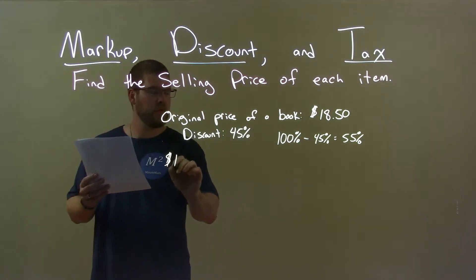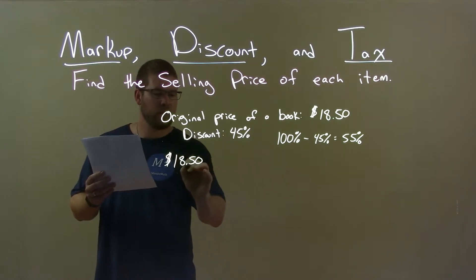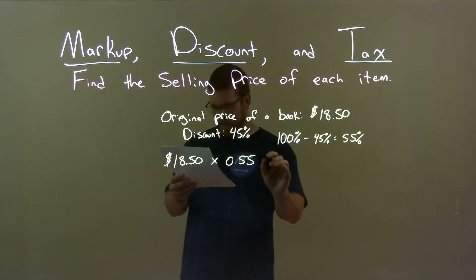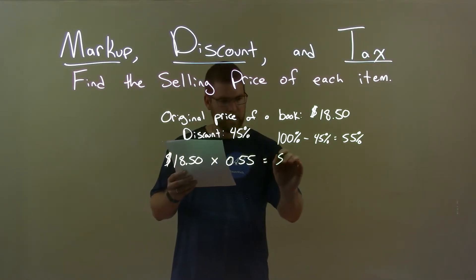Now, we take the cost of the book, $18.50, multiply that by 0.55, 55% as a decimal, and we get an answer here of $10.18.